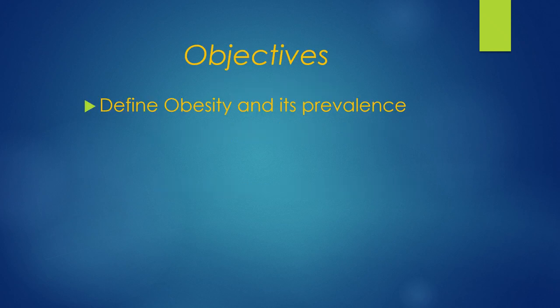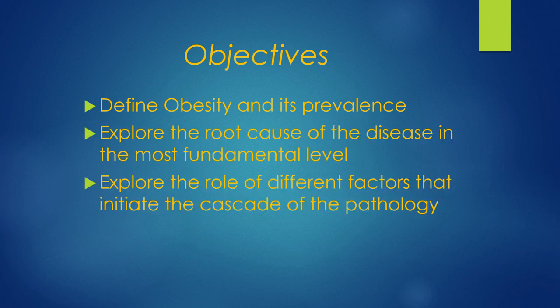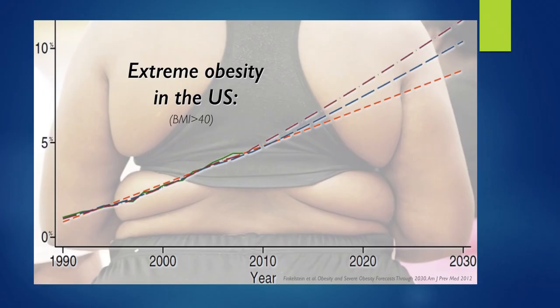My objective today is to define obesity and its prevalence, explore the root cause of the disease at the most fundamental level, and explore the different factors that affect the pathology. There is extreme obesity in the United States, and currently the data shows that there's about 40%, and it's progressing at an alarming rate.